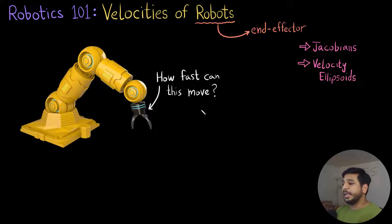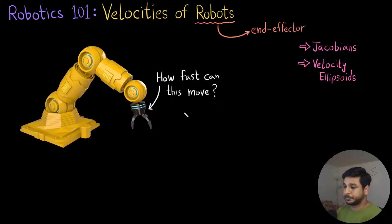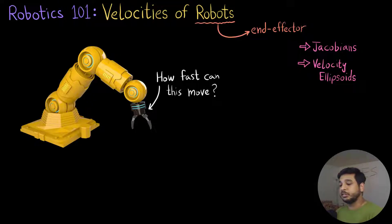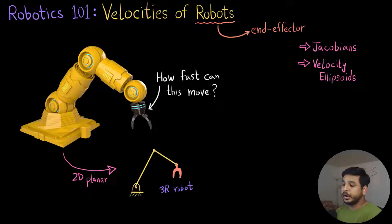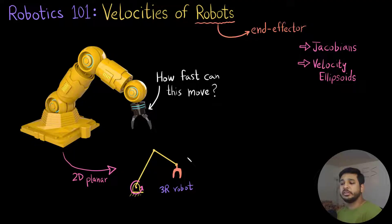Here I have a fancy robot and I have to determine how fast the end effector of this robot can move. Keeping in line with what we have been doing throughout this series, since we are dealing with 2D planar robots, converting this to a 2D planar robot, we get something similar to this. We have a 2D planar version — it is a 3R robot, since it has got 3 revolute joints here, here, and here.